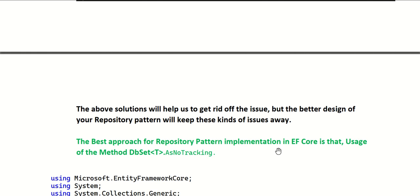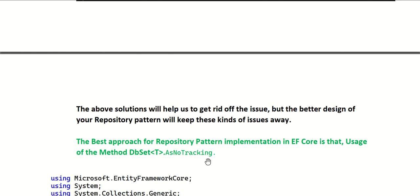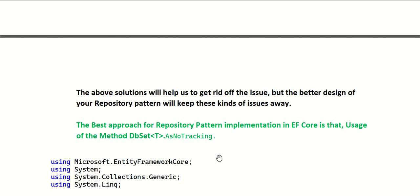The best approach for repository pattern implementation in EF Core is using the AsNoTracking method on DbSet<T>. The moment you apply AsNoTracking on your DbSet, none of your entities are being tracked. This will boost your application performance because EF Core's built-in tracking mechanism keeps tracking all your entities, which is time-consuming and resource-intensive. With AsNoTracking, your entities are treated like plain POCO objects - plain old C# objects.